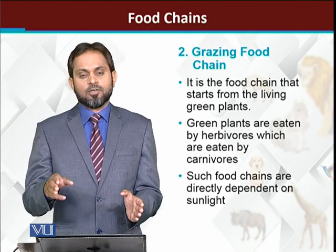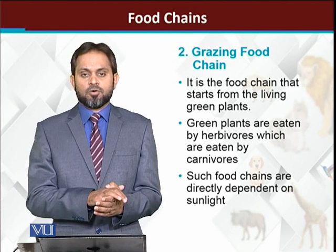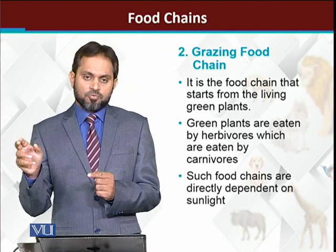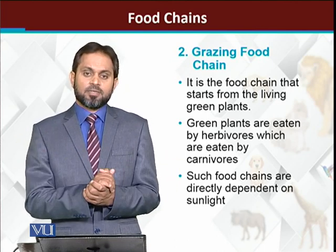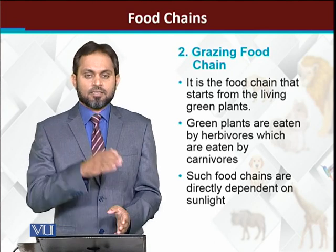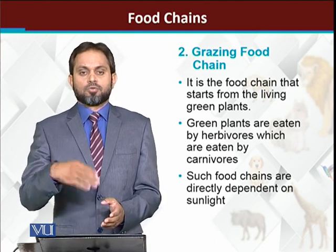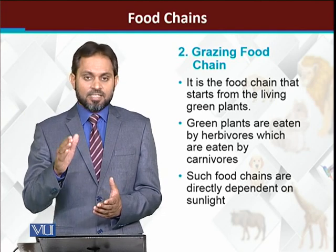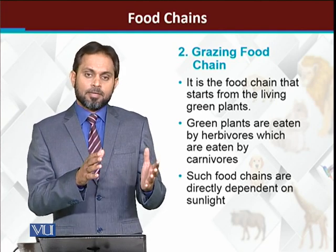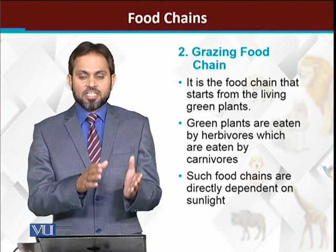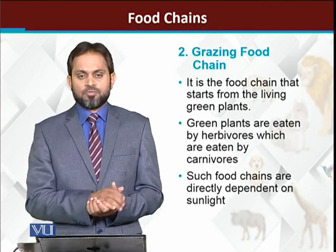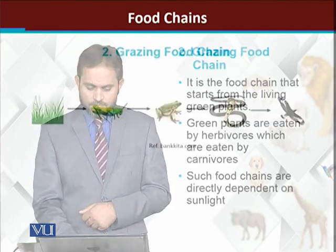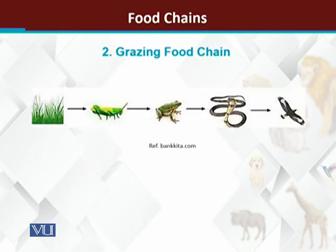For example: plants to zebra, zebra to lion — this is a short food chain. The length of a food chain can vary, but the main theme is that energy is traveling through the food chain.